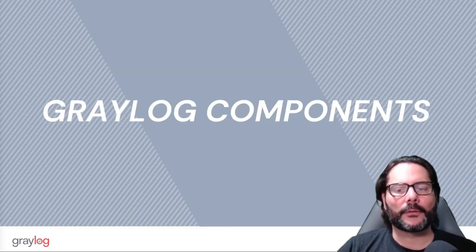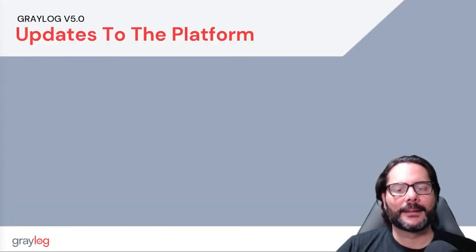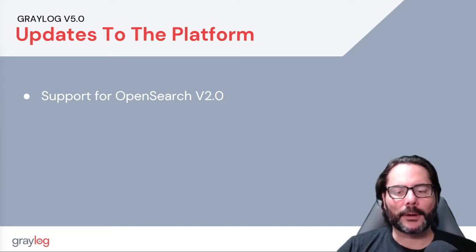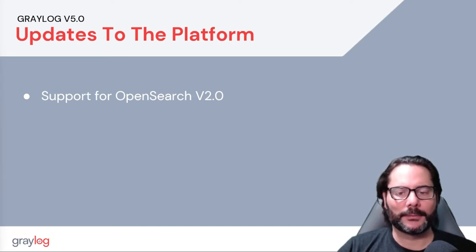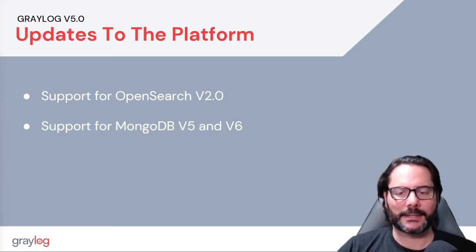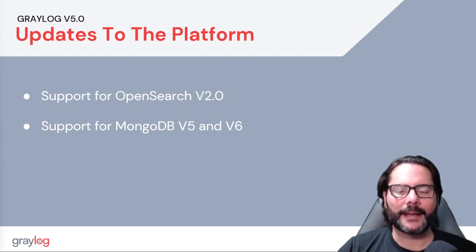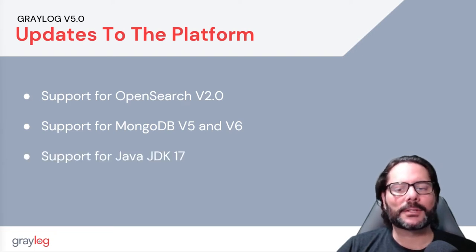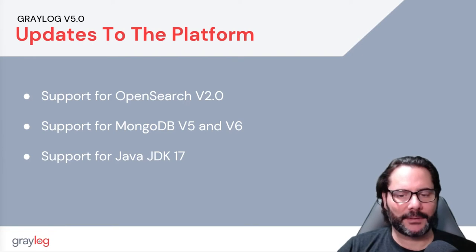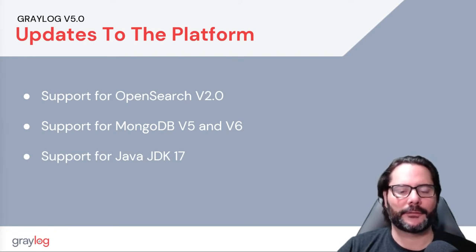First, I'd like to go over the updated support with some of our components within Greylog. Some of the updates are support for OpenSearch version 2.0, support for MongoDB version 5 and 6, which is a requirement for Greylog release 5, as well as support now for Java JDK version 17, also required in version 5.0.